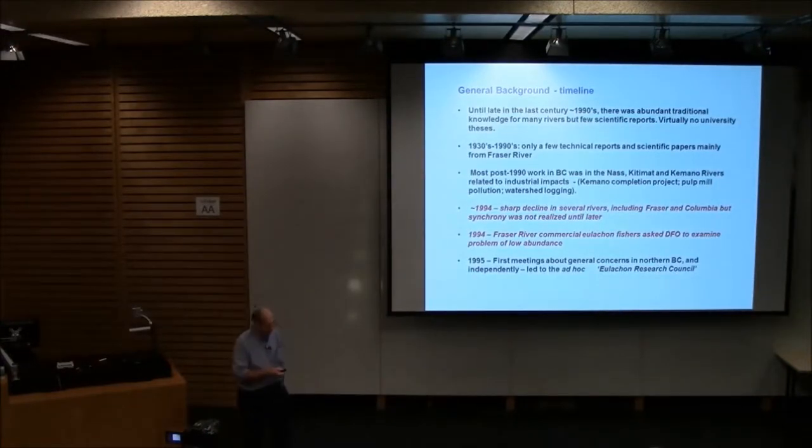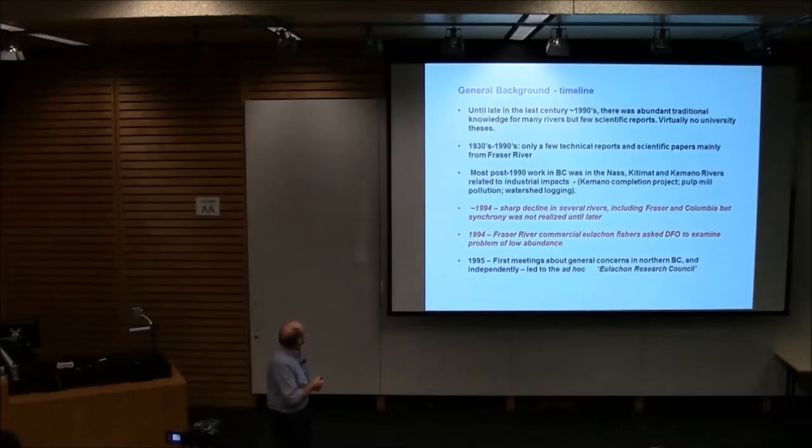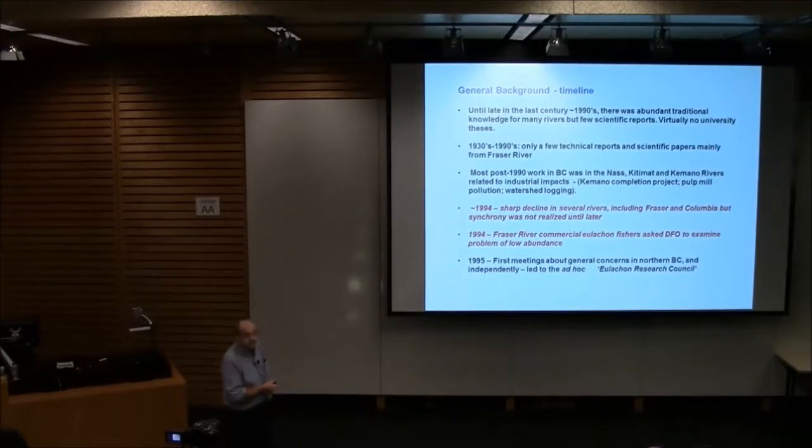I'd like to give you a little bit of background. We didn't know much about hooligans, at least in a technical or scientific way, until the 1990s. There were a few scientific reports, mainly done out of the biological station in Nanaimo, but very few. To my knowledge, there were almost no university theses on hooligans. From the 1930s to the 1990s, that was it, only a few technical reports. Bill Ricker, the preeminent scientist of the biological station, started looking at hooligans and wrote a technical report. He started doing some of his first stock recruit analysis on hooligans. He gave up, it didn't work very well. But that was about it.